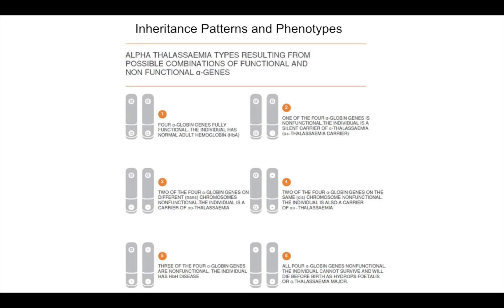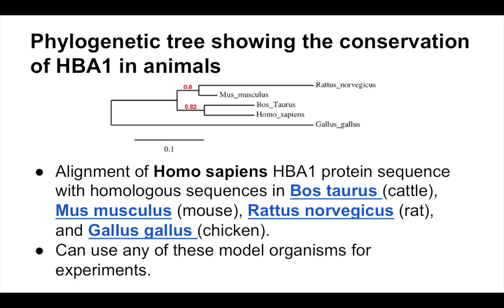Alpha thalassemia varies in severity as a result of different inheritance patterns. The severity of the phenotype varies depending on the number of non-functional alleles one has. In order to understand the function of the HbA1 gene in humans, we have to understand how it works in other model organisms. The phylogenetic tree shows the conservation of the HbA1 gene across these model organisms.